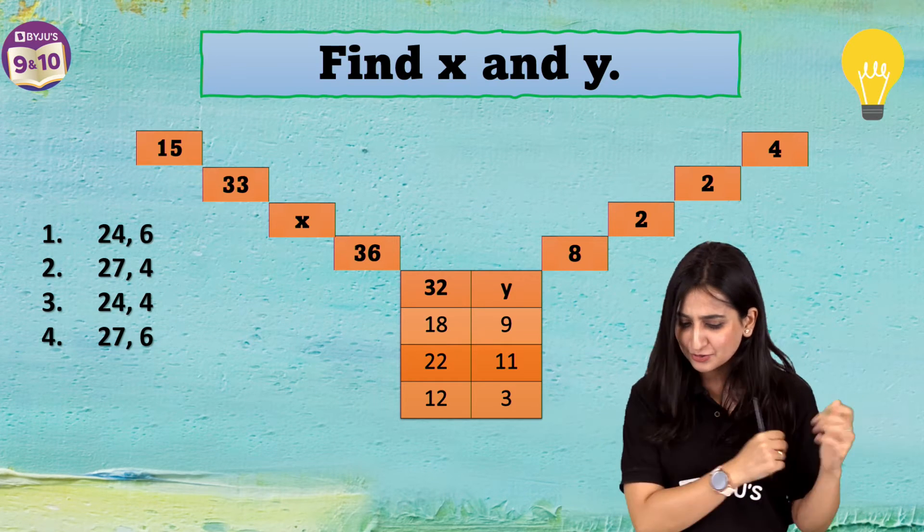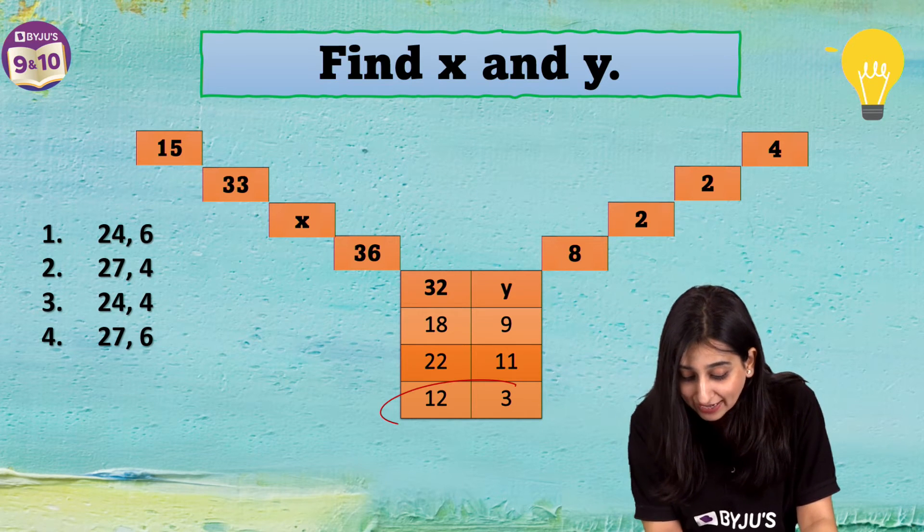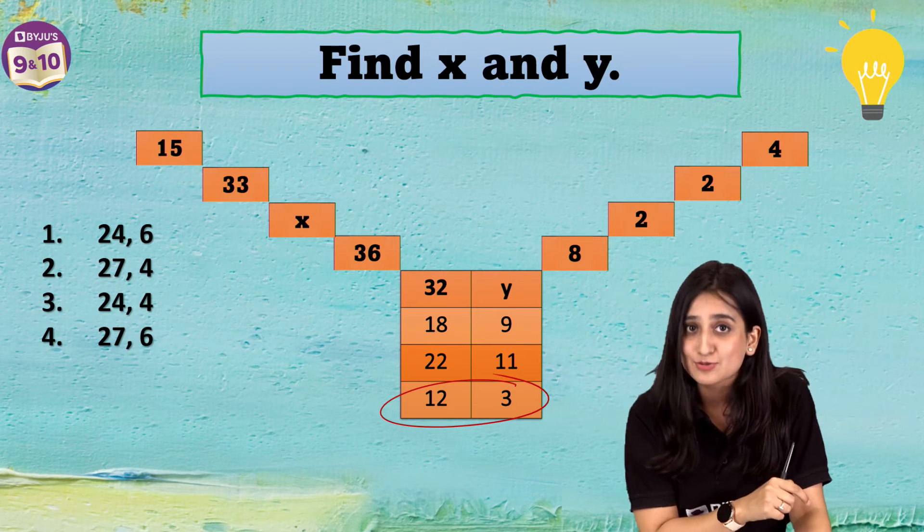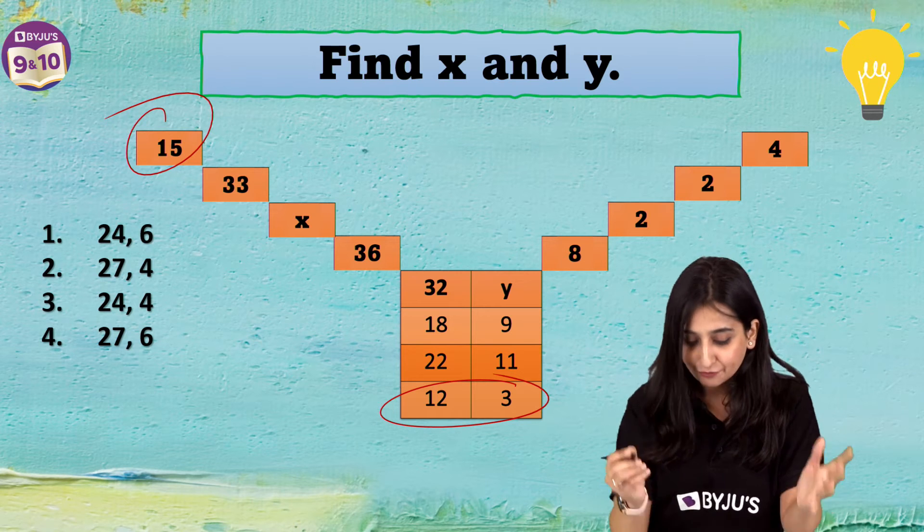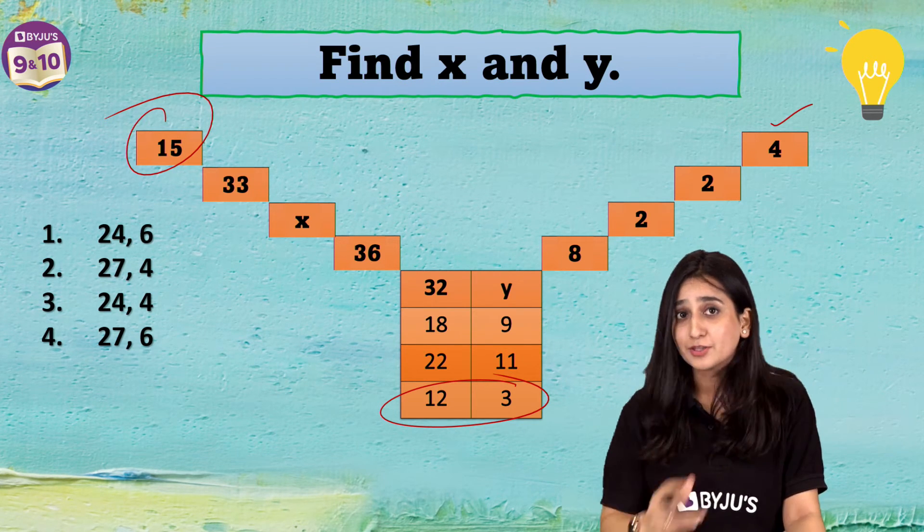Meanwhile, let's try to figure out the pattern over here. Let's see here. 12 and 3. If I add these two numbers, I am getting 15. And if I divide 12 by 3, I am getting 4. Ta-da! We got the pattern.